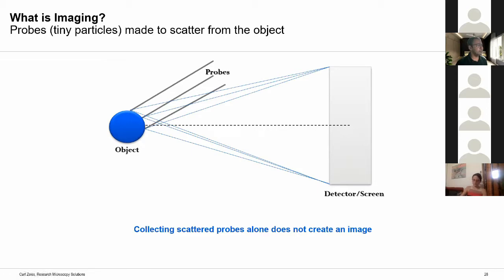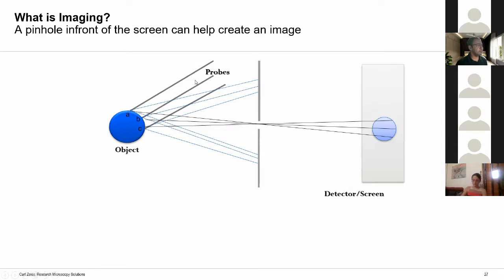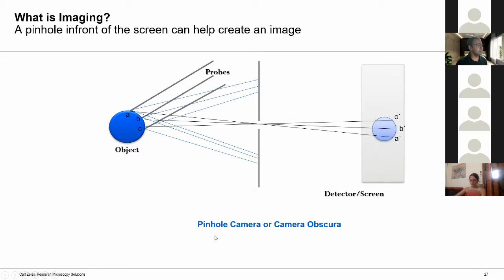One way to remedy this situation is by putting a pinhole. The pinhole blocks most probes from reaching the screen, but now probes reaching point A' come predominantly from point A, probes reaching B' come from B, and probes reaching C' come from C. So the probes have greater definition to where they are falling — this creates an imaging system. This kind of arrangement is called a pinhole camera or camera obscura, and it is probably the earliest and simplest imaging system.